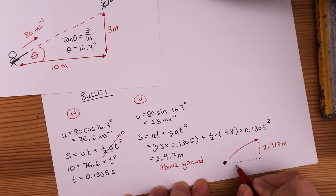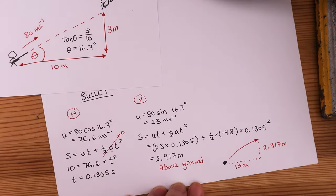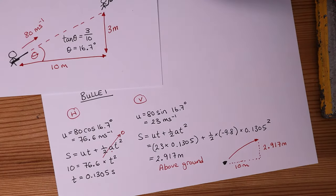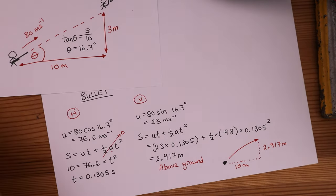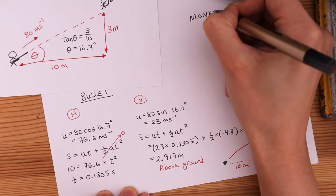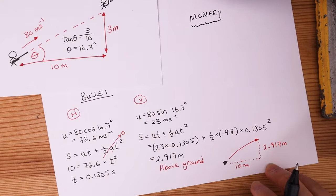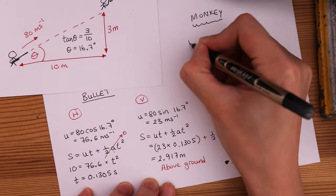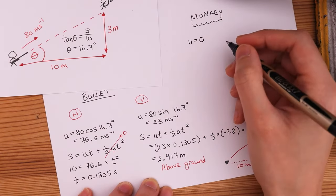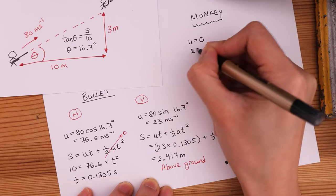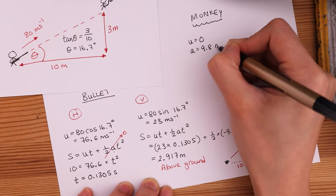Now after that amount of time, where will the monkey be? And remember, the monkey simply lets go of the branch such that he is experiencing freefall. If the monkey simply freefalls under the influence of gravity, his initial velocity will be zero. His acceleration is going to be 9.8 meters per second squared.